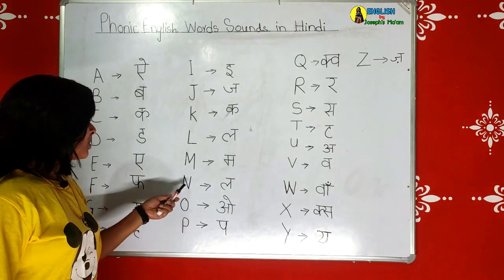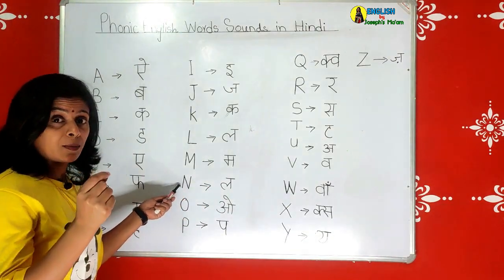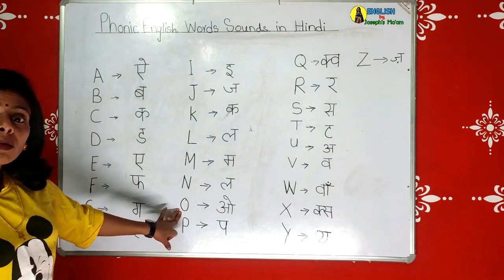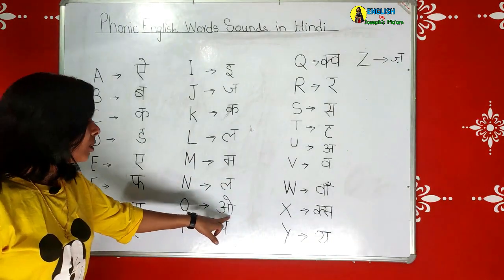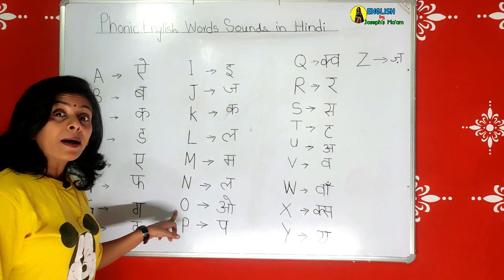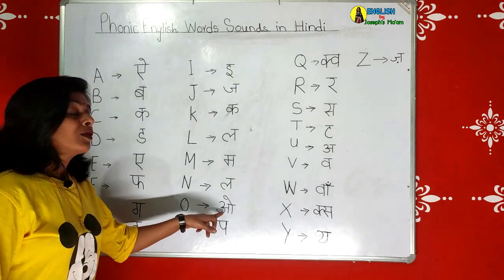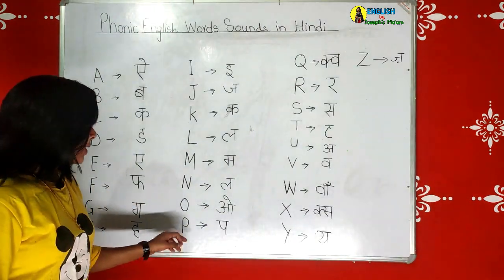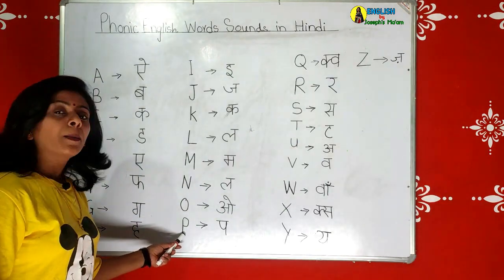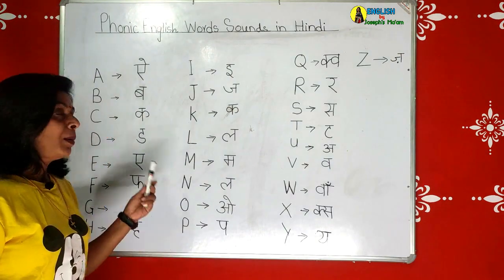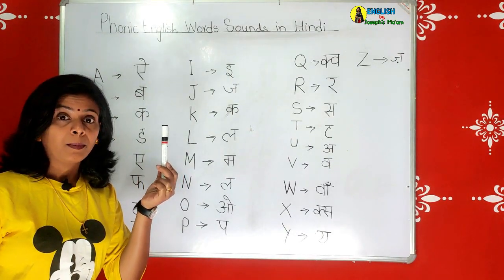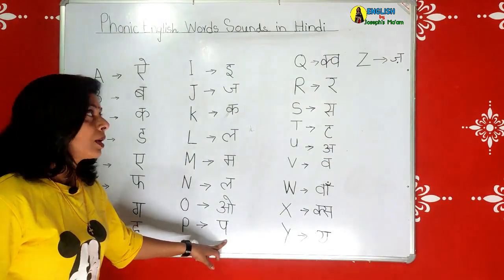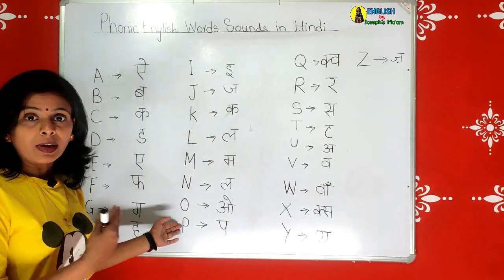Next we proceed to N. The Hindi phonic is 'na'. N is for nest - 'na', nest. Now we come to O. The Hindi phonic is 'o'. O is for orange. Some of you say 'orange' incorrectly - it's 'orange', the 'o' sound. Next is P. The Hindi phonic is 'pa'. P is for pen or pan - 'pa'.